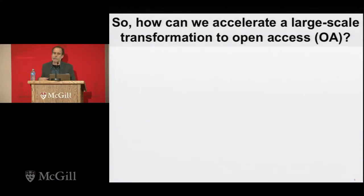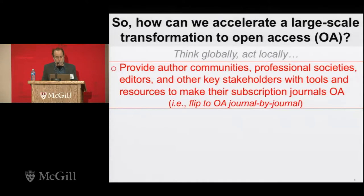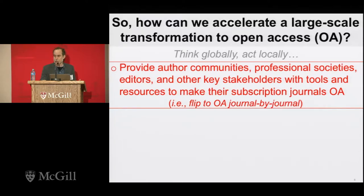How can we accelerate a large-scale transformation to open access? At the University of California, we've been undertaking efforts to push the ball all the way down the court. The idea is something tried and true: think globally, act locally. The first thing we've been doing is working with individual author communities, developing workshops and templates to help authors work with their professional societies. Many of our authors are editors and peer reviewers, and we're providing them tools and resources to make their subscription journals open access — flipping journals one by one, peeling them away from commercial publishers and bringing them back to the academy.